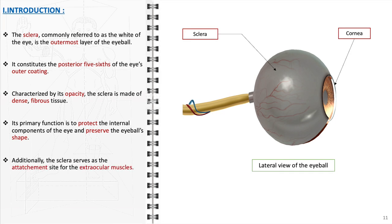In addition to its protective role, the sclera serves as the attachment site for the extraocular muscles, which are responsible for controlling eye movement.